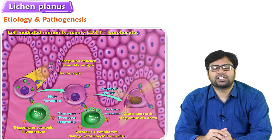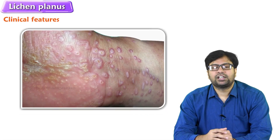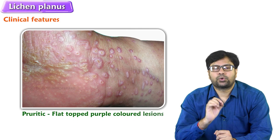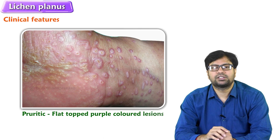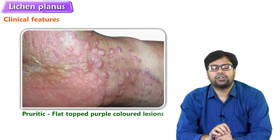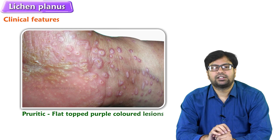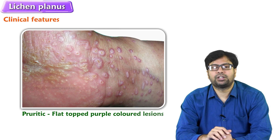What are the clinical features of lichen planus? Symptoms: pruritic. Signs: flat-topped, purple-colored lesions. If you notice them, the first thing we have to keep in mind is lichen planus.